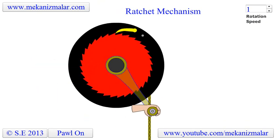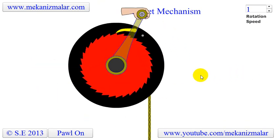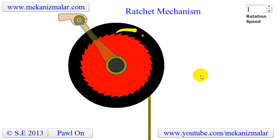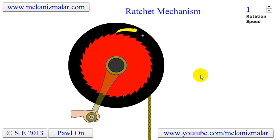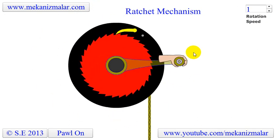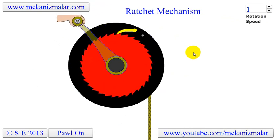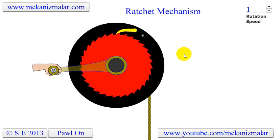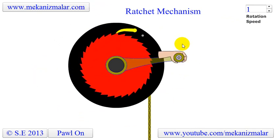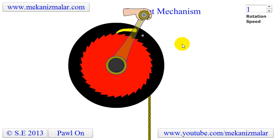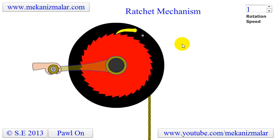The ratchet mechanism, shown in this video, is a device that allows continuous rotary motion in one direction while preventing motion in the opposite direction. This mechanism consists of a round ratchet wheel with teeth and a pivoting, gravity-controlled finger called a pawl that engages the teeth.